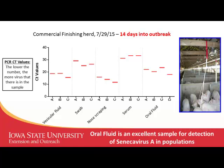The veterinarian went back about 14 days after the initial outbreak and collected additional samples to determine the appropriate sample type. Three different samples were collected: fluid from vesicles on the snout or feet, nasal swabs, serum from blood, and we also hung ropes in the facility to collect oral fluids. Reading the PCR CT values — the lower the CT value, the more virus present — the best samples were vesicular fluid or scrapings around erosions on the nose. But oral fluid was also a very good sample for detecting virus in a population, and a much easier sample to collect.